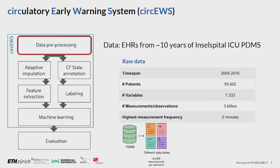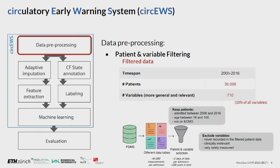The data we use is provided by the University Hospital in Bern. It has electronic health records from 2005 to 2016, about 50,000 patients, more than 7,000 variables, and about 3 billion measurements — so it's really big data. The highest measurement frequency is every two minutes. However, not all 7,000 variables are relevant to circulatory failure, and most of the important ones are only available after 2008 due to a medical system update in the hospital. So we apply a few filtering criteria.